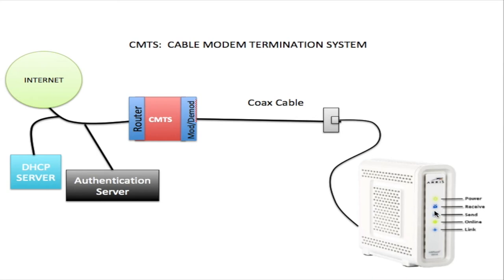Once the modem receives this public IP address, it contacts the CMTS to complete the registration. If the CMTS is satisfied with how the modem is set up, it completes the registration and the modem is able to get onto the internet. You'll know this registration is processed because the online light on the modem will be solid, indicating there is a connection to the internet.